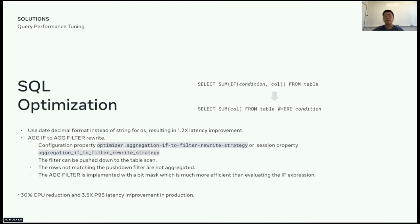So, less data will be scanned and be processed. Even without the filter pushdown, in many cases, we still see significant improvement from the bitmask filtering, which prevents the engine from evaluating the if expression. And the bitmask filtering is a lot cheaper. As mentioned, the join query has a lot of instances of this kind of aggregation if. So, this workload is able to benefit a lot from this optimizer and we observed about 30% CPU reduction and 3.5 times p95 latency improvement in production after we rolled it out.